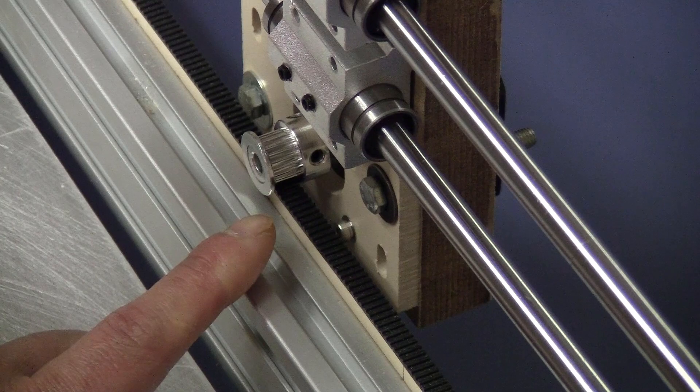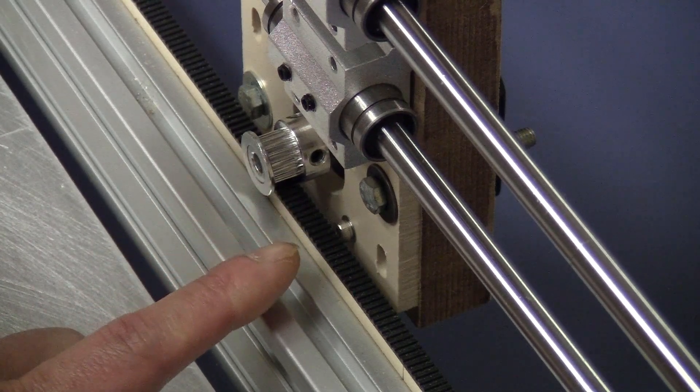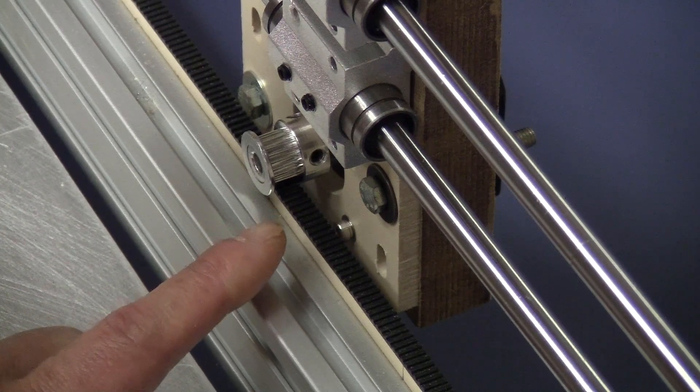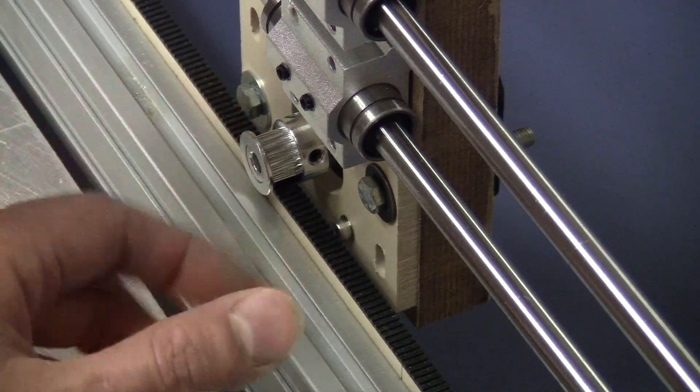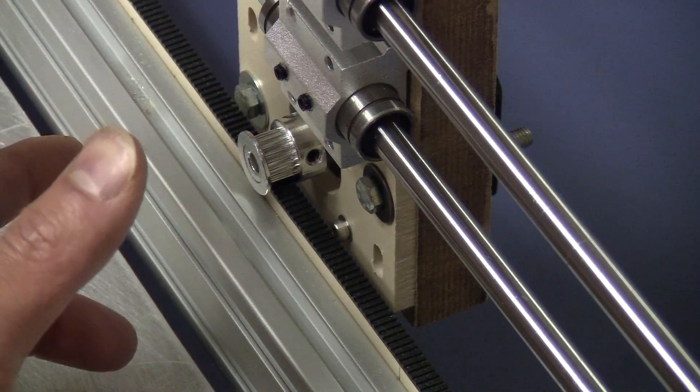As you can see here, on this GT2 belt and the pulley, the teeth are straight. So normally the gear rack and the pinion just come with helical teeth. So when the pinion rotates, the teeth will always be engaged. That's how the helical gears work.